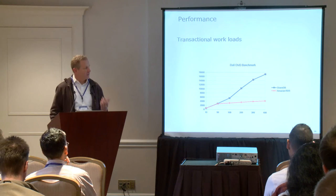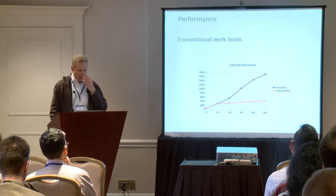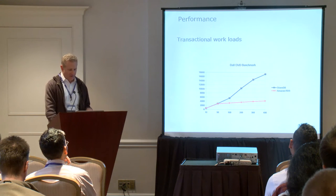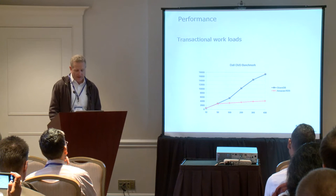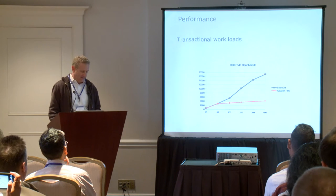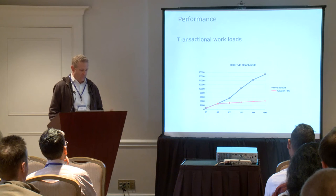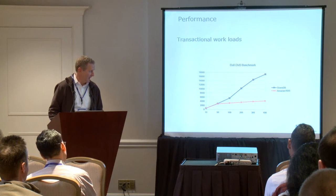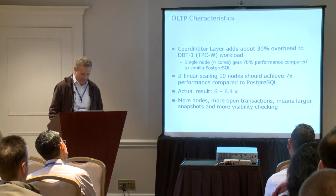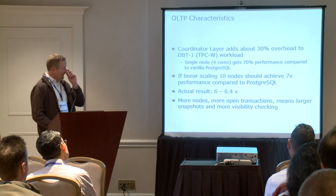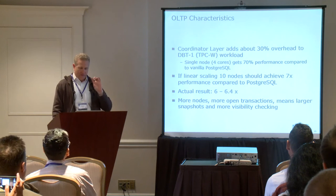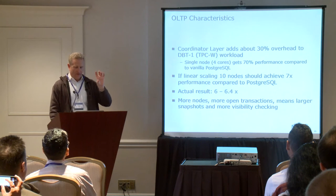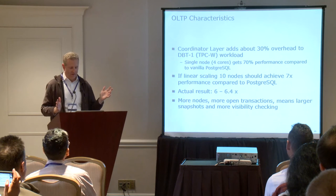In terms of performance characteristics, we ran some different tests with some different benchmarks — these are a bit dated — comparing against Amazon RDS. It kind of maxed out, but we were able to keep getting better performance as we added more and more concurrency on AWS. For OLTP workloads, in the architecture we have a coordinator layer and then a layer that has all the data nodes.